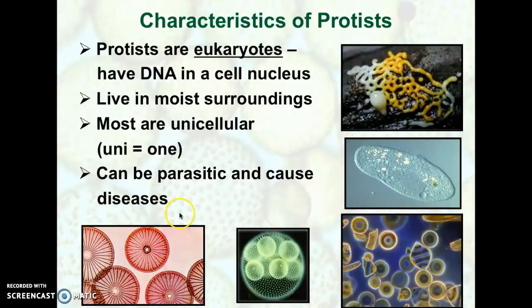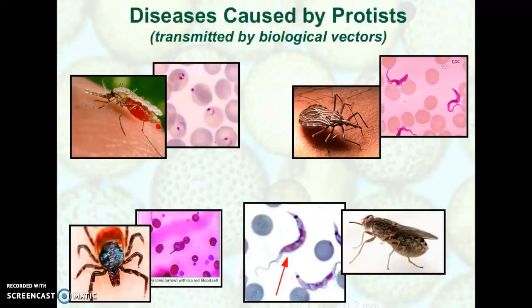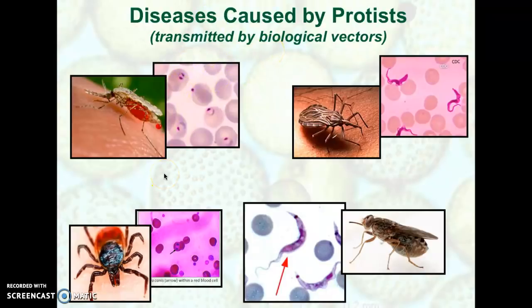Protists can act parasitic, and when they do they can be harmful — causing infectious diseases and using organisms like people as a host. Now let's look at diseases caused by protists transmitted by biological vectors. 'Bio' means life, so a biological vector is a living organism other than a human that can transmit a disease and pass it on to another organism.